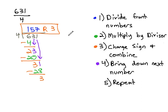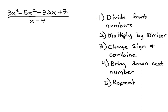157, remainder 3. We can follow this exact same process that we used to divide using long division, to divide polynomials. The only difference is, instead of having numbers, we now have terms.